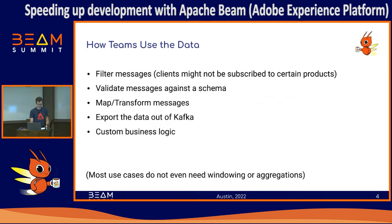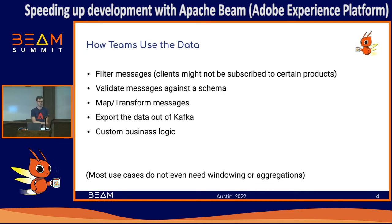Very often teams want to do simple operations with this data. Most use cases don't actually involve windowing aggregations or late data handling. Most of the time, teams want to filter out data. For example, a client might not be subscribed for a feature or a product, so teams might not want to ingest messages coming from that client — we would filter that data out for them.